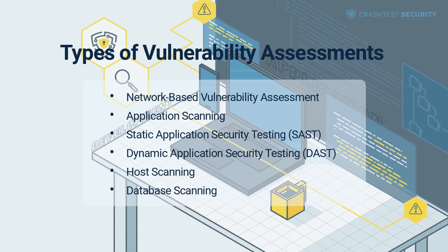Dynamic Application Security Testing (DAST) involves vulnerability scanning tools within a compiled code. These tools test an application from an outsider's perspective with limited knowledge of the written source code. DAST tools simulate the action of an attack vector while testing the application during runtime to uncover potential security loopholes. DAST tools explore many vulnerabilities, including memory corruption, cross-site request forgery, remote file inclusion, buffer overflow, and denial of service.